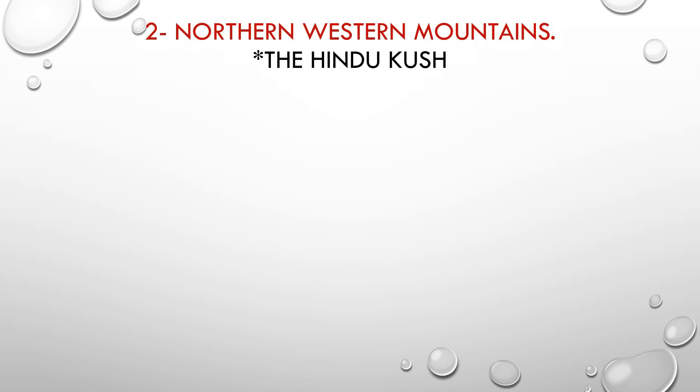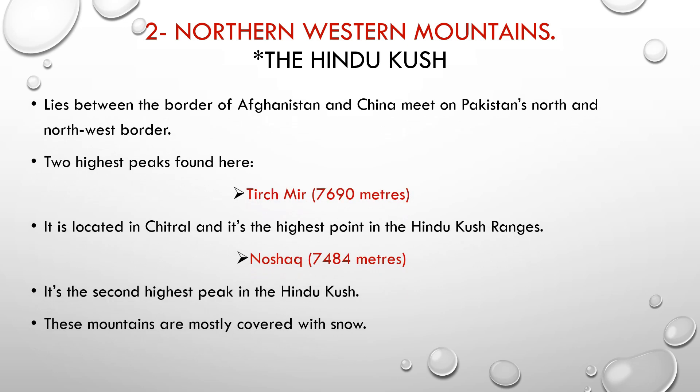We are done with northern mountains. Now we move to the second: northwestern mountains, where we will study Hindu Kush. Hindu Kush lies between the border of Afghanistan and China and meets Pakistan's north and northwest border. Hindu Kush has two highest peaks — the first is Tirich Mir, with a height of 7,690 meters, located in Chitral. Tirich Mir is the highest peak of the Hindu Kush ranges.